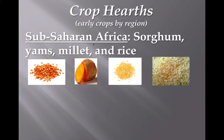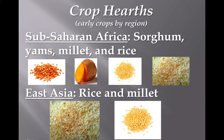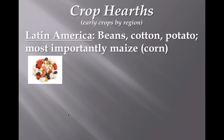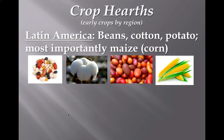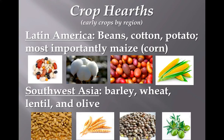For each hearth, you want to know the early crops — though these have changed due to diffusion. Sub-Saharan Africa: yams, millet, rice. East Asia: rice and millet — rice grown in watery, wet areas, which fits geographically with Southeast and East Asia. Latin America: beans, cotton, potato, and most importantly maize, also known as corn. You need to understand maize is the same thing as corn — they flip-flop these words on questions. Southwest Asia, the Middle East, is one of the older hearths: barley, wheat, lentils, and olives.